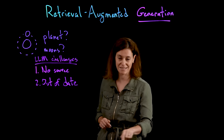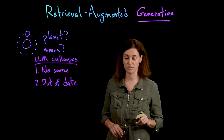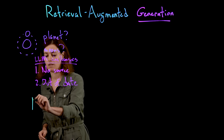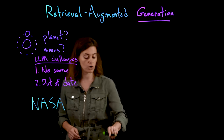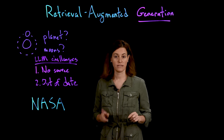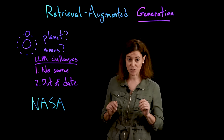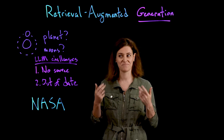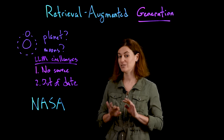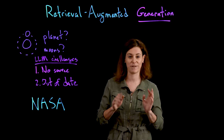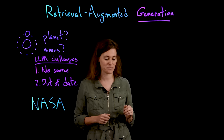Now, what would have happened if I had taken a beat and first gone and looked up the answer on a reputable source like NASA? Well, then I would have been able to say the answer is Saturn with 146 moons. And in fact, this keeps changing because scientists keep on discovering more and more moons. So I have now grounded my answer in something more believable. I have not hallucinated or made up an answer, and I didn't leak personal information about how long ago it's been since I was obsessed with space.